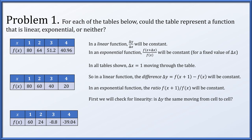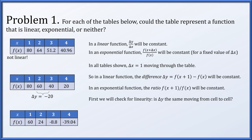First let's check linearity. In each table, we'll compute delta y's. In the first table, we have a difference of 16, but the next difference is not 16, so this is definitely not a linear function. In the second table, we have differences of negative 20, negative 20, and negative 20. Since delta y is constant, this is a linear function. In the last table, delta y computes to negative 36, and the next value will not be negative 36, so this is not a linear function.